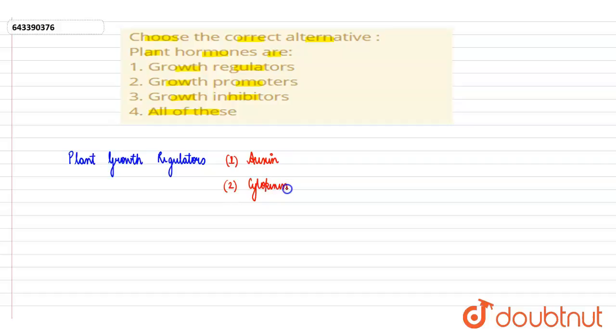Number three, gibberellic acid; number four, ethylene; and number five, abscisic acid. So these are the five different kinds of plant growth regulators that we study.